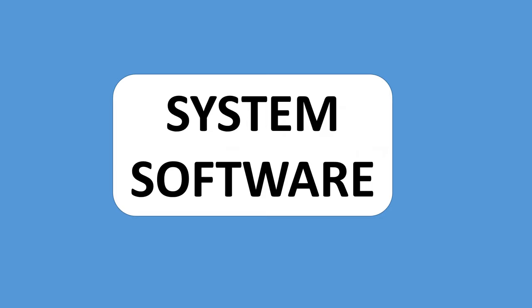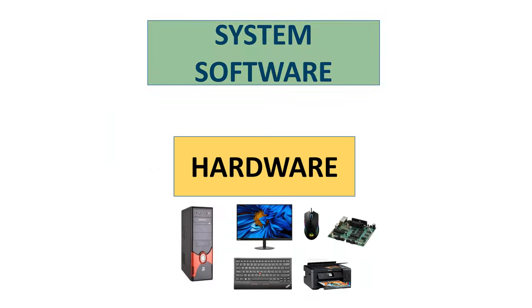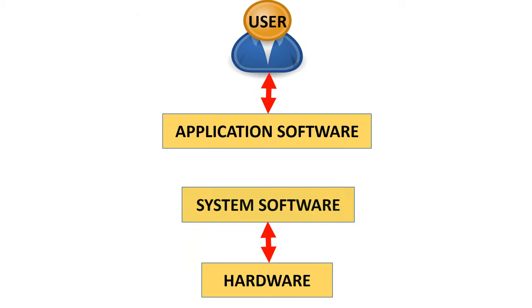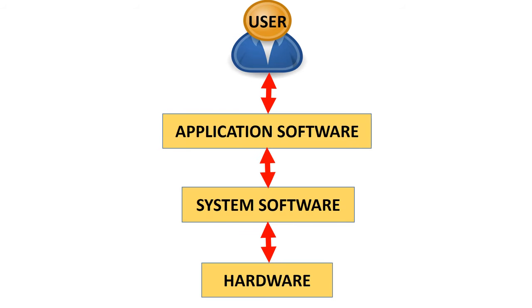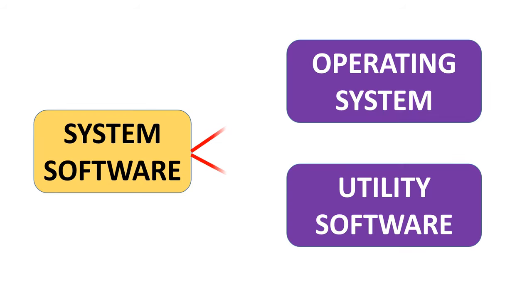System software is a set of programs that controls the computer hardware. The system software is the platform for running the application software. System software includes operating systems and utility software.